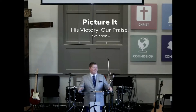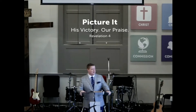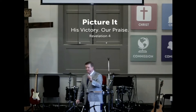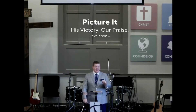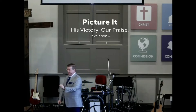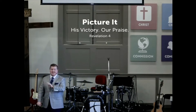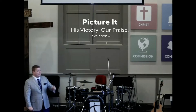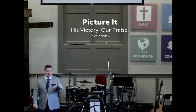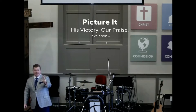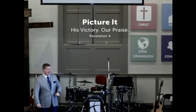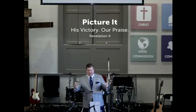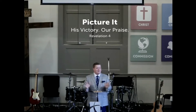John, from chapter four onward, begins to paint this beautiful picture of what is going to happen at the end of human history. Revelation four and five are the two most important chapters in the entire book because John is answering two questions: who is in control, and who has the authority to bring about the end of human history?